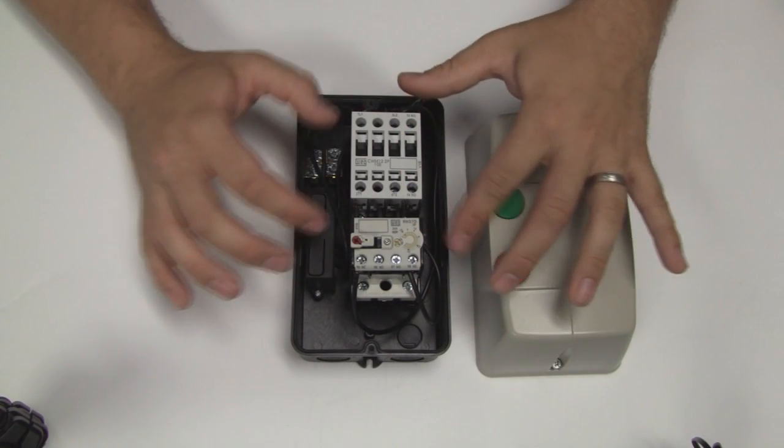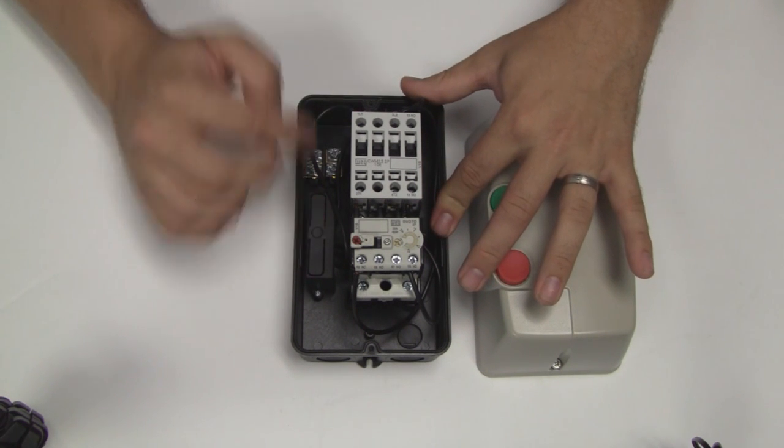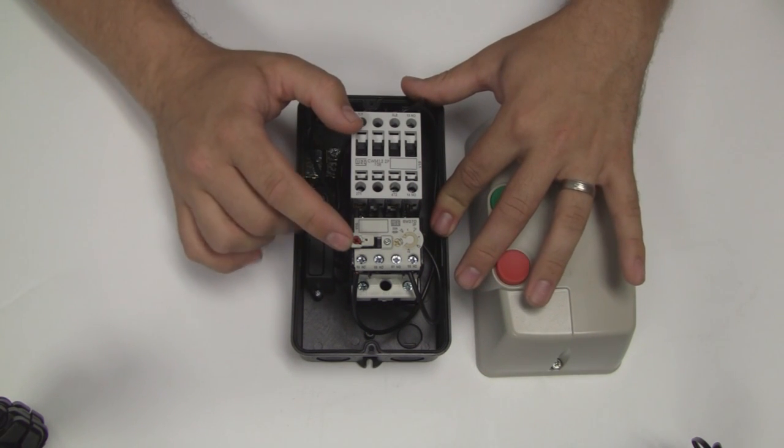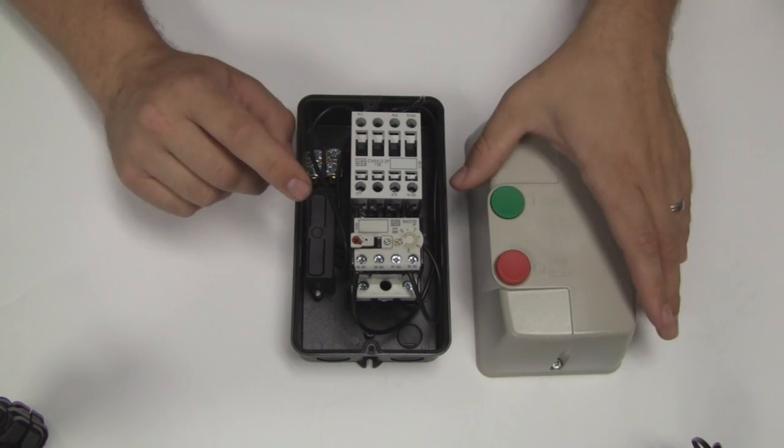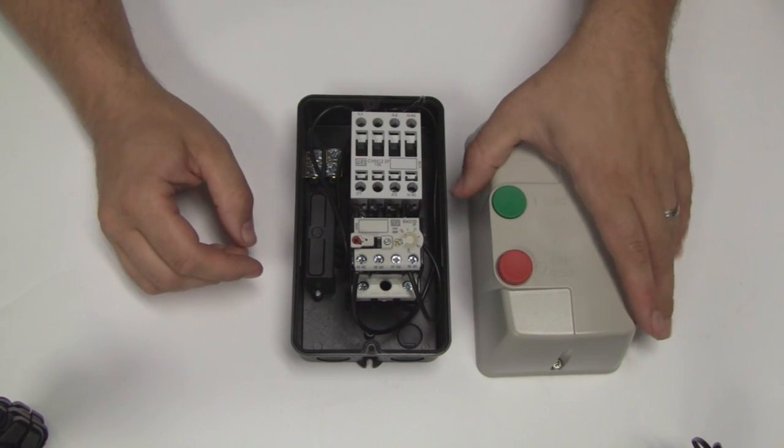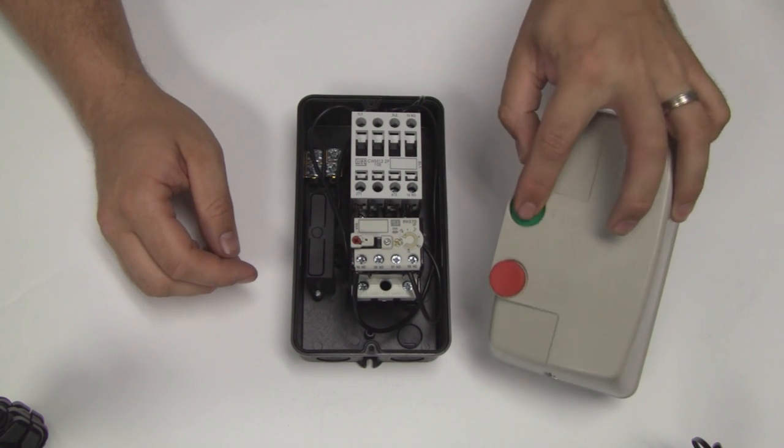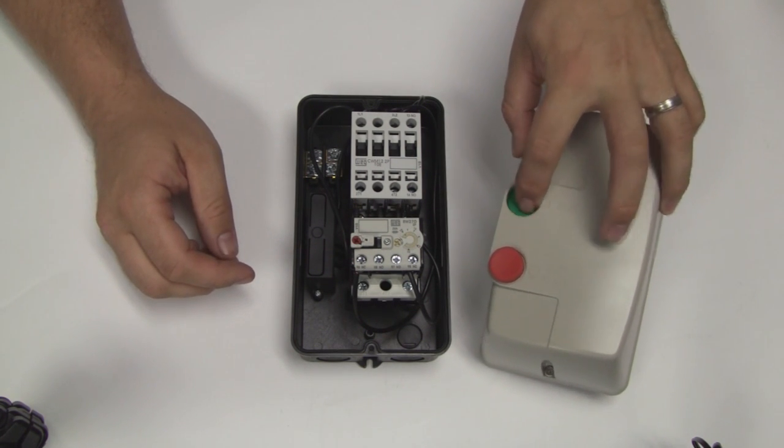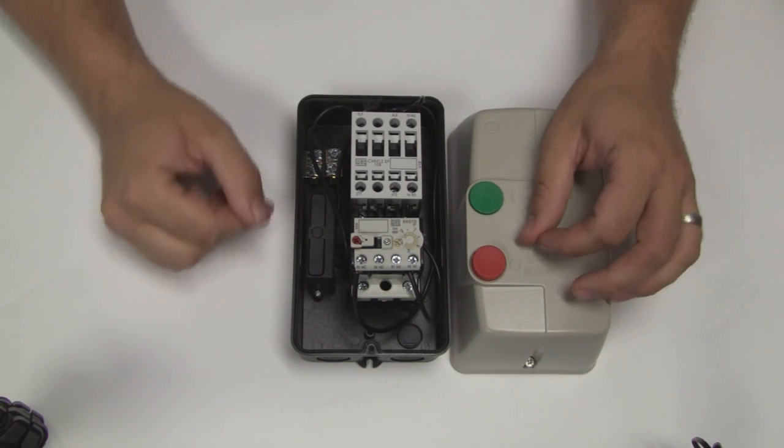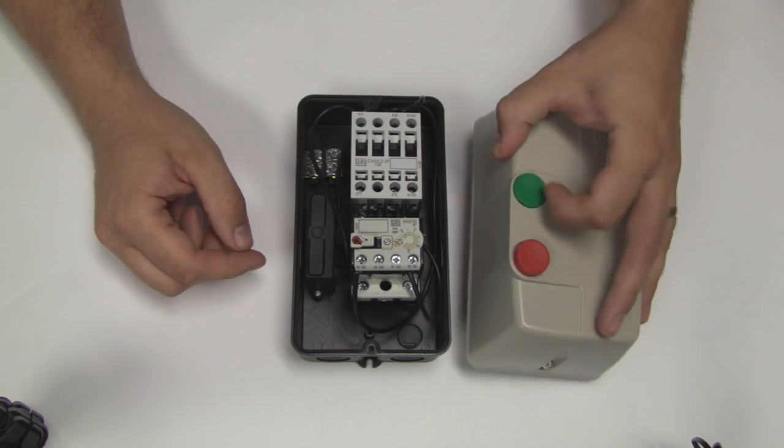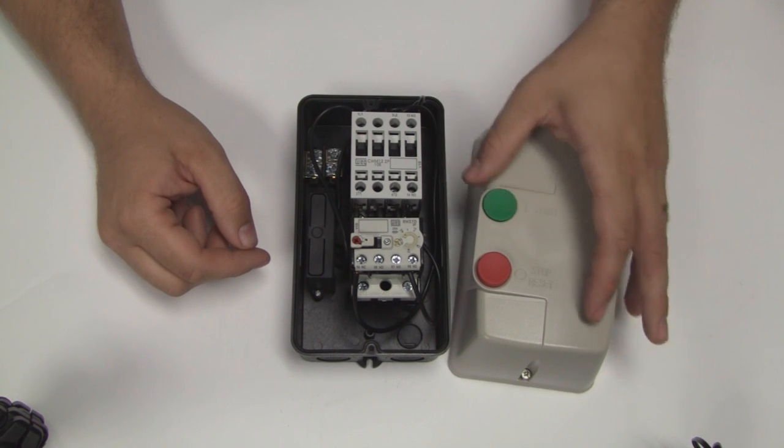The reason you would use something like this is to keep the high amperage that would flow through to your motor out of your user interface panel. You don't want 30 amps or something flowing behind the button that your user is putting their hand on every time they start the machine. You'd much rather have that safely tucked away inside something where they're only interfacing a very small amount of current, so there's not a whole lot of danger.